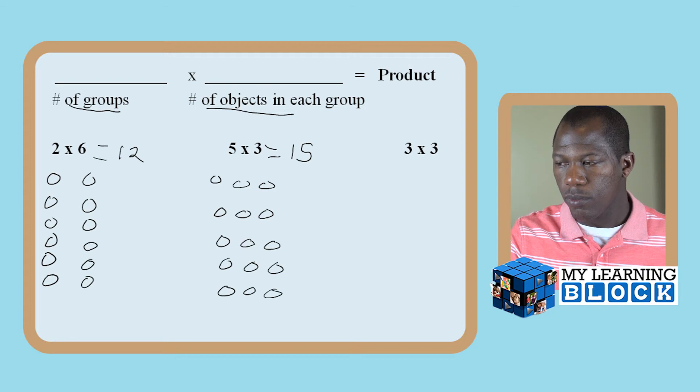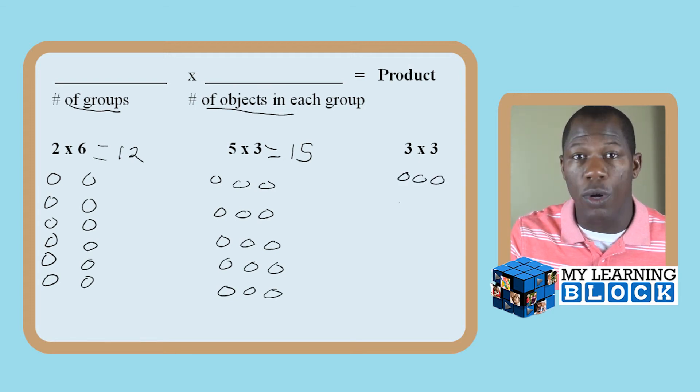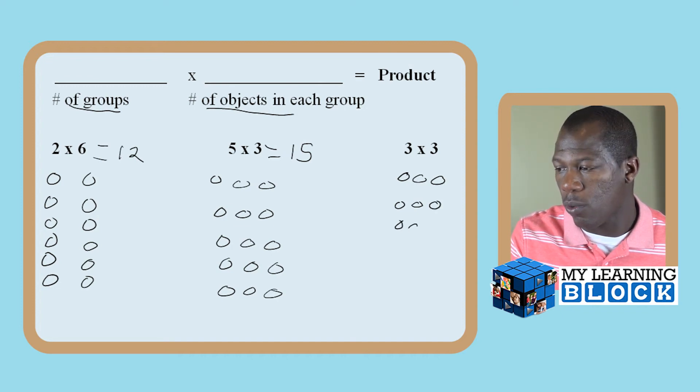The last one, I have three groups of three. One, two, three, one group. One, two, three, two groups. One, two, three, three groups. One, two, three, four, five, six, seven, eight, nine. Perfect.